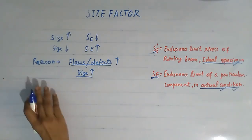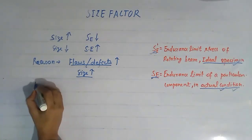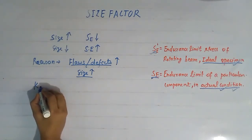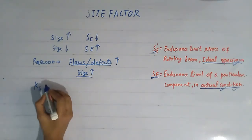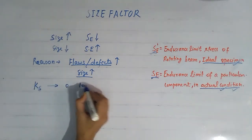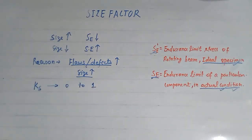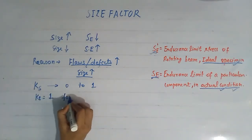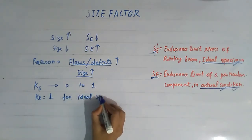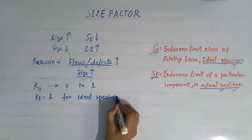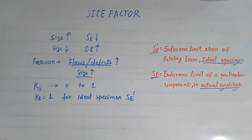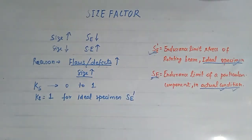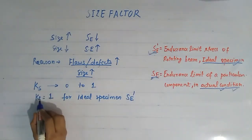To account for the size of the specimen, we introduce a factor Ks, called the size factor, which varies from 0 to 1. The size factor Ks is equal to 1 for the ideal specimen, which has endurance limit Se'. We now establish the relation between the endurance limit of the actual specimen and the endurance limit of the ideal specimen using this size factor.